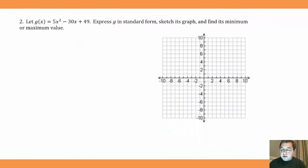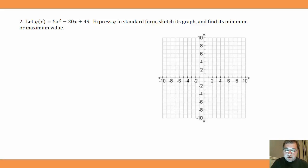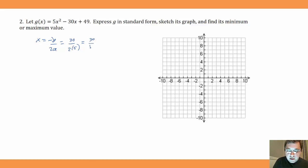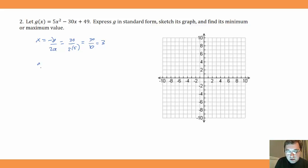Now let's use the other method to find the vertex — you can decide which you prefer. Let g(x) = 5x² - 30x + 49. Express g in standard form, sketch the graph, and find its minimum or maximum value. Instead of completing the square, we'll use the formula x = -b/(2a) to find the x-coordinate of the vertex. b is -30, so x = -(-30)/(2 × 5) = 30/10 = 3. The x-coordinate of the vertex is 3. To find the y-coordinate, we plug 3 into g(x) and find g(3).